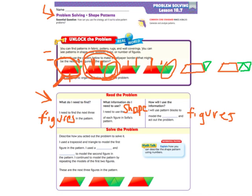And then back to the original, oops, trapezoid and one green triangle. So here's the next one, the next two, the third. So describe how you acted out the problem to solve it. I used a trapezoid and triangle to model the first figure in the pattern. I used a trapezoid should be the word that you put in there.